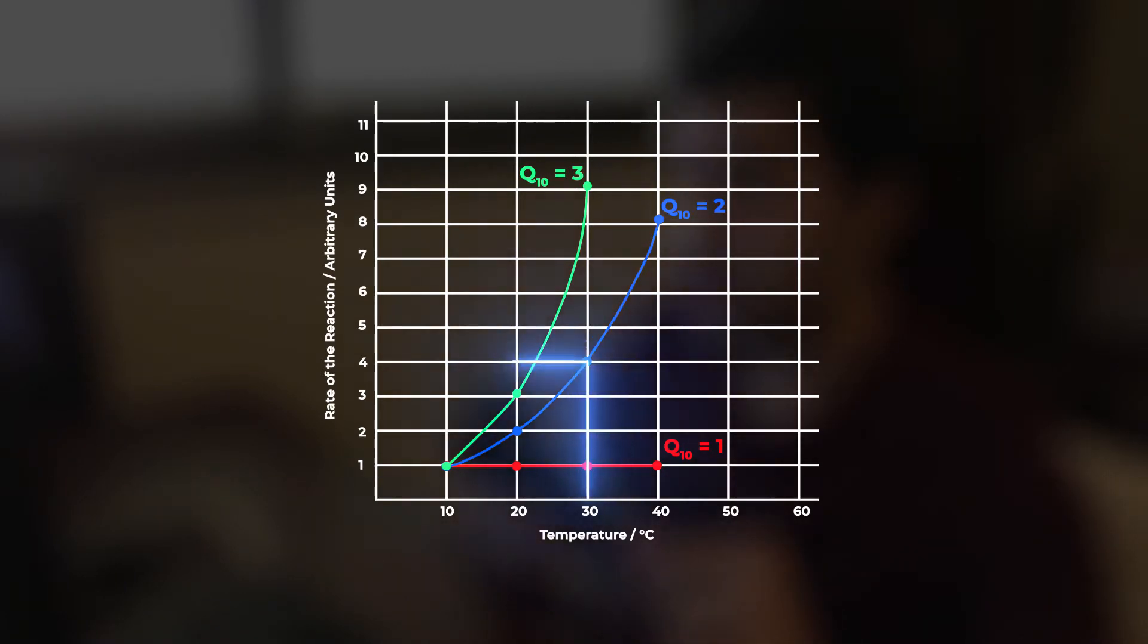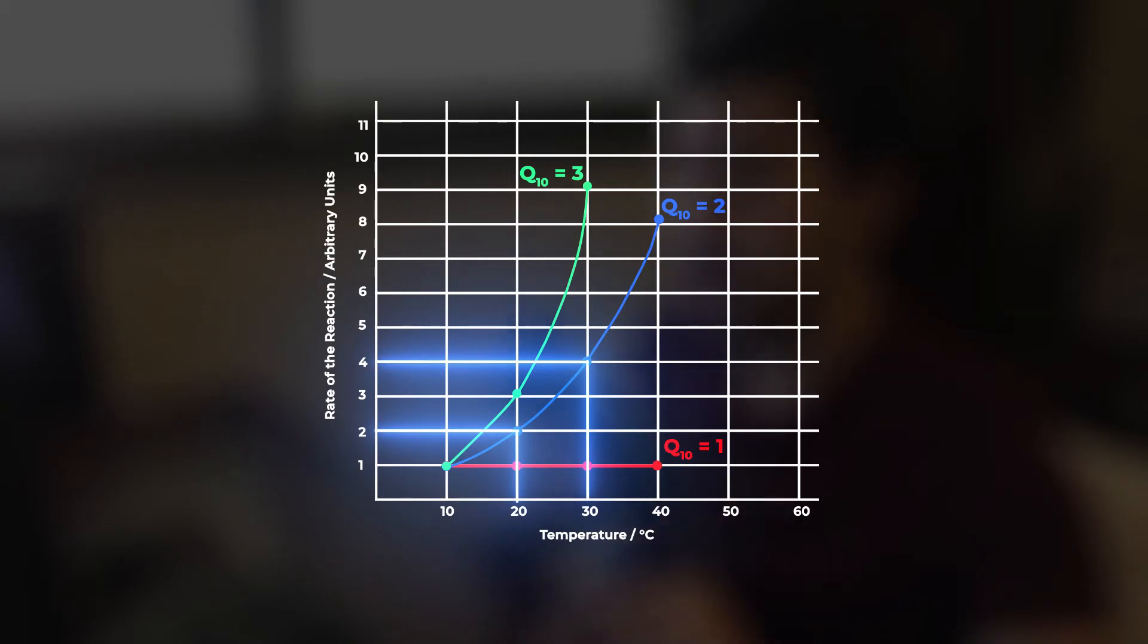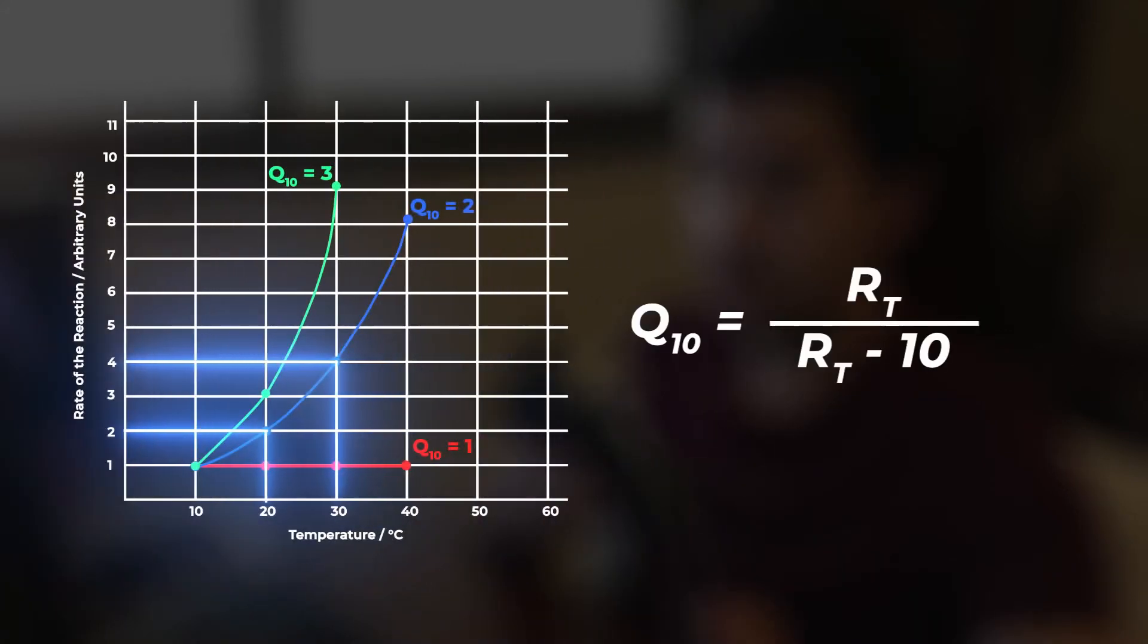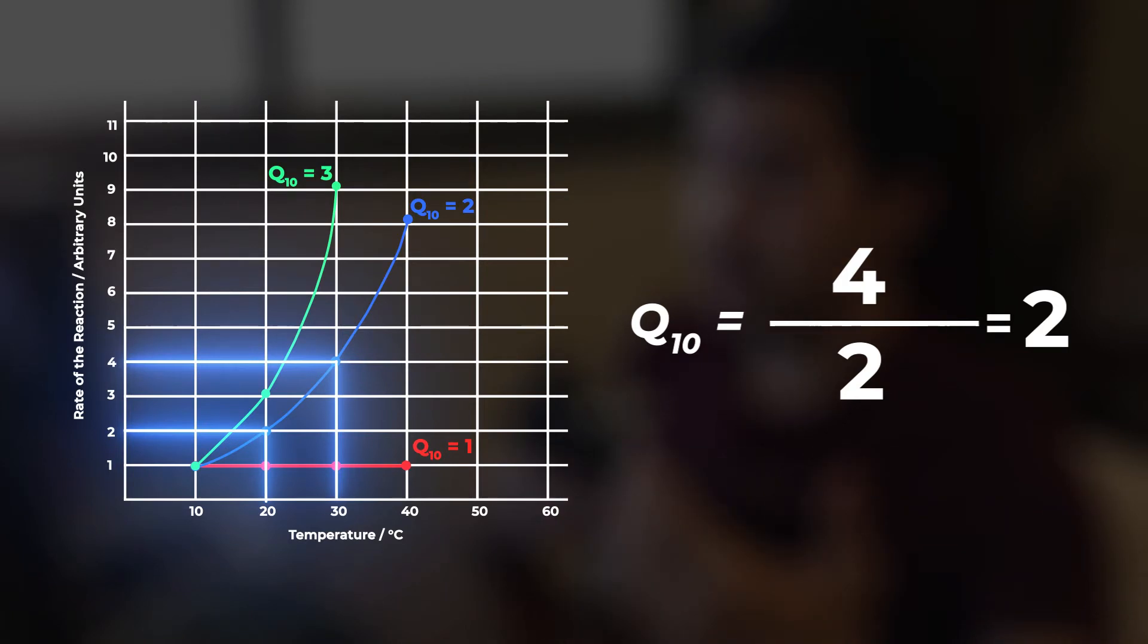Now let's calculate the Q10 of a reaction from the graph. Let's look at the blue curve. Let's take our first value when the temperature is 30 degrees Celsius and the rate of reaction is 4. According to the equation, our second rate should be at a temperature of 10 degrees less. So at 20 degrees Celsius, the rate of reaction is 2. Plugging our values into the equation, we get a Q10 of 2, and this tells us that the rate of reaction will double for every increase in temperature by 10 degrees Celsius.